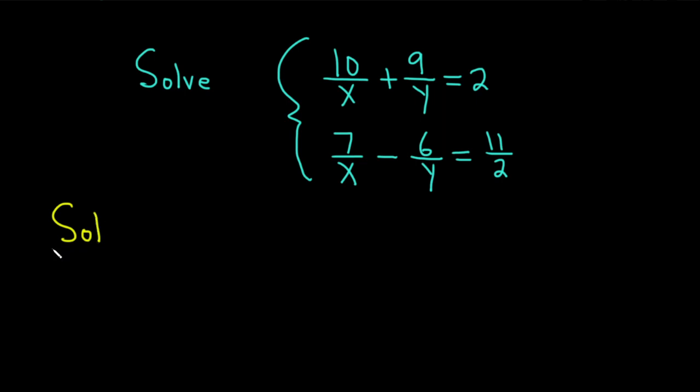Solution. I'm thinking we can use something called the elimination method, and we can use it to eliminate these terms here. So if we multiply the first equation by 2, what's going to happen is that second term is going to become 18 over y. And if we multiply the second equation by 3, the second term will be negative 18 over y. So when we add, everything should cancel. Let's go ahead and do that.